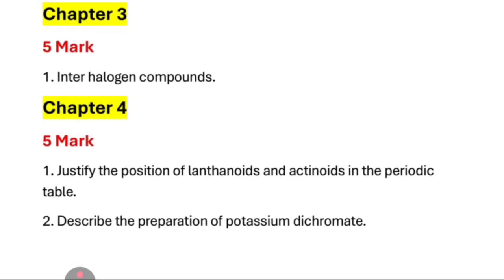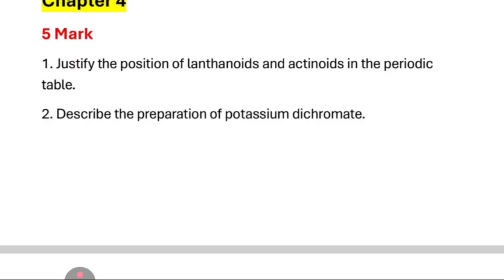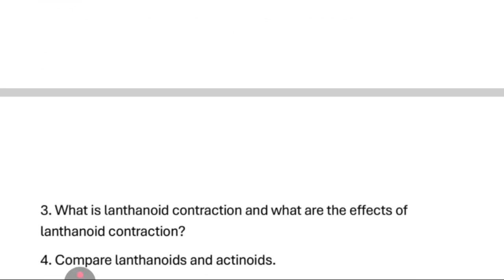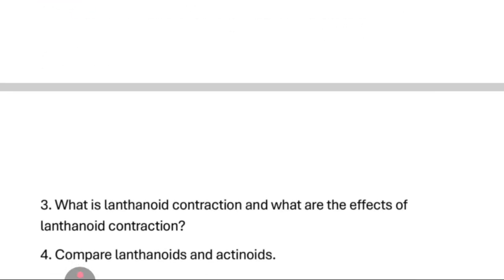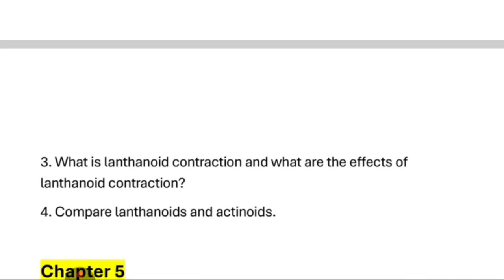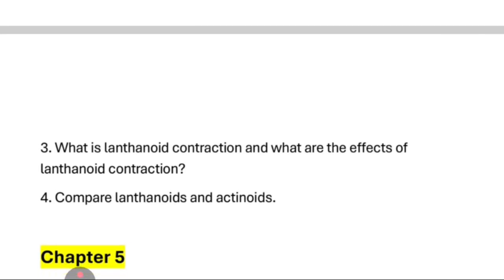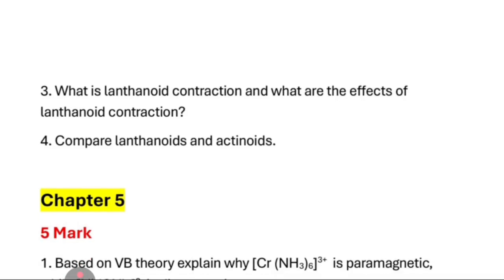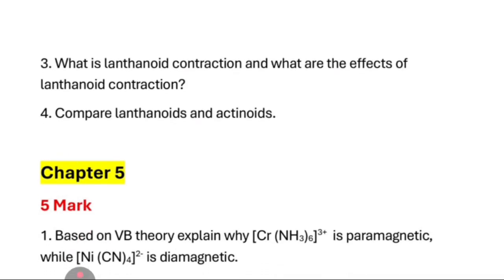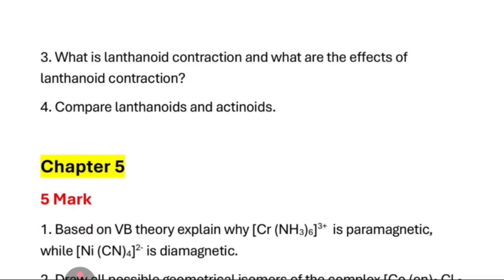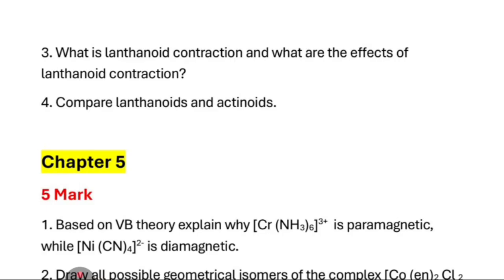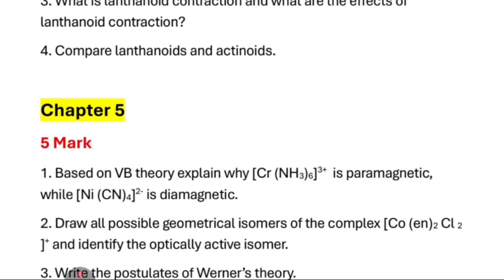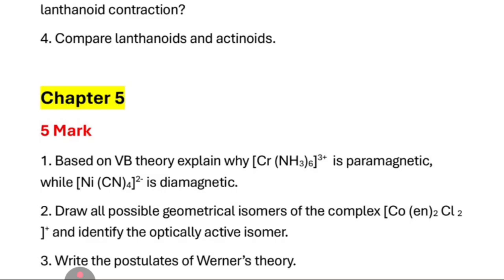Chapter 4 continued: Describe the preparation of potassium dichromate. What is lanthanide contraction and what are the effects of lanthanide contraction? Fourth — the most repetitive question — compare lanthanides and actinides. Chapter 5: Based on VB theory, explain why a complex is paramagnetic while another is diamagnetic.